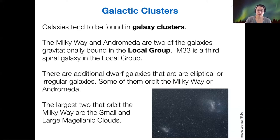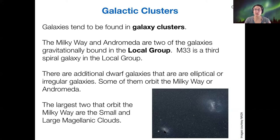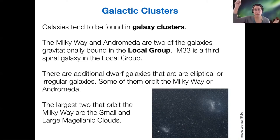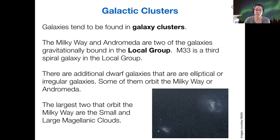Our Magellanic Clouds are our major dwarfs, but we have others. We've talked about the Sagittarius dwarf and the Canis Major dwarf — those are two that the Milky Way is currently tearing apart and pulling out into tidal streams.